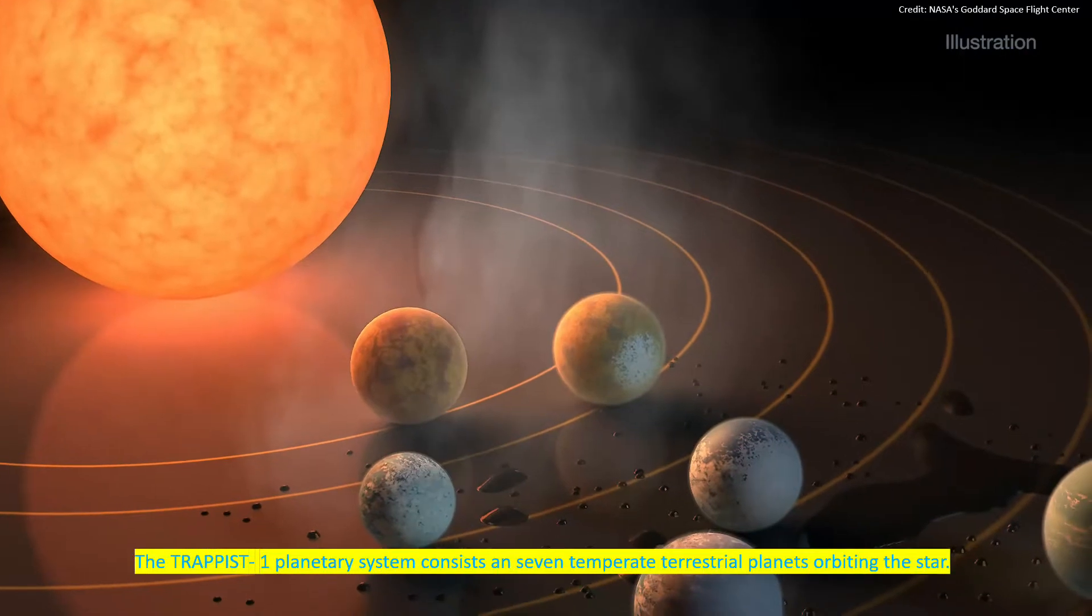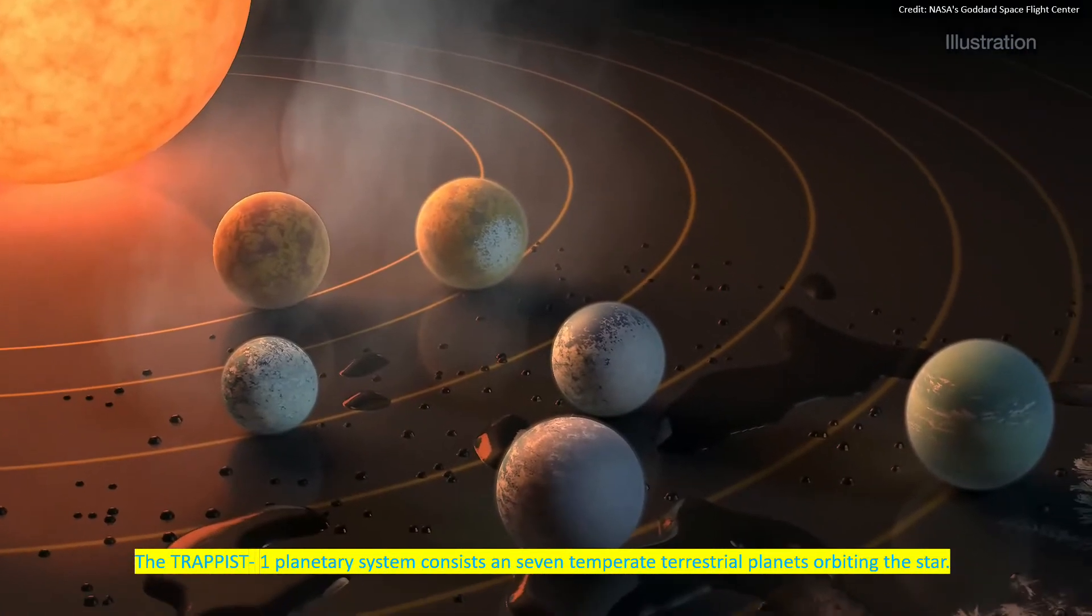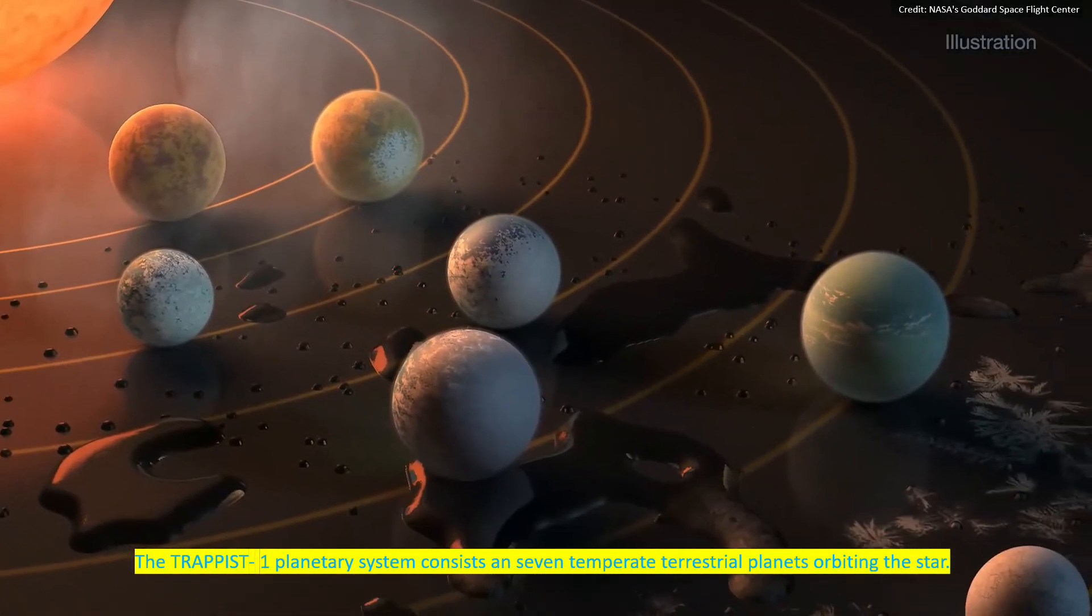The TRAPPIST planetary system consists of seven temperate terrestrial planets orbiting the star.